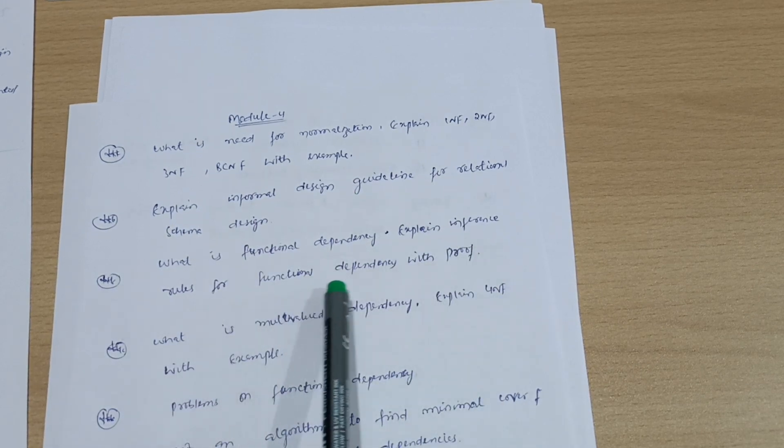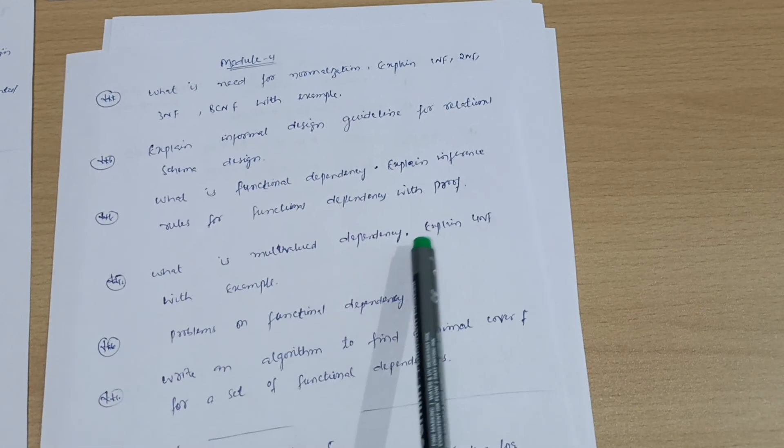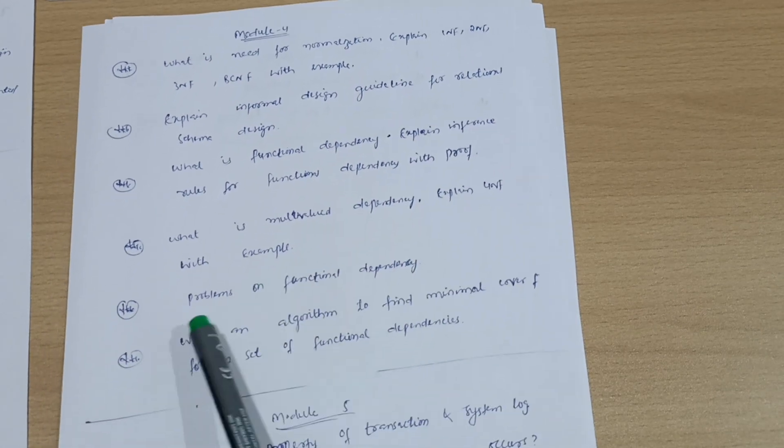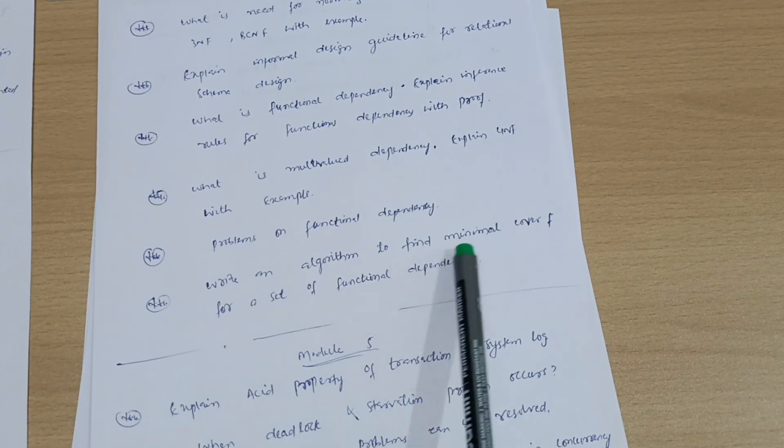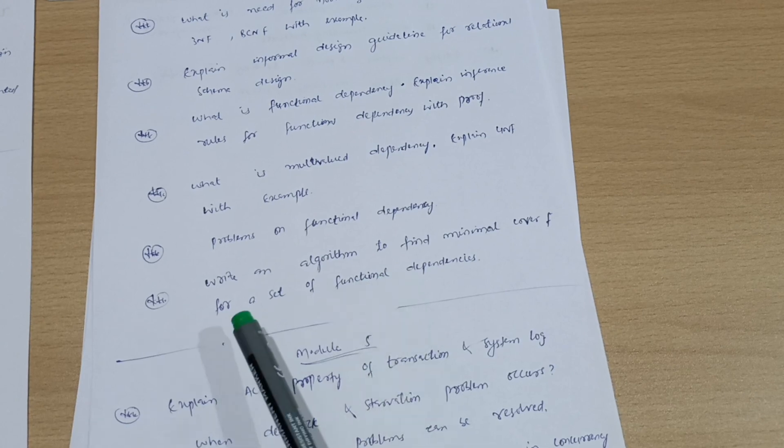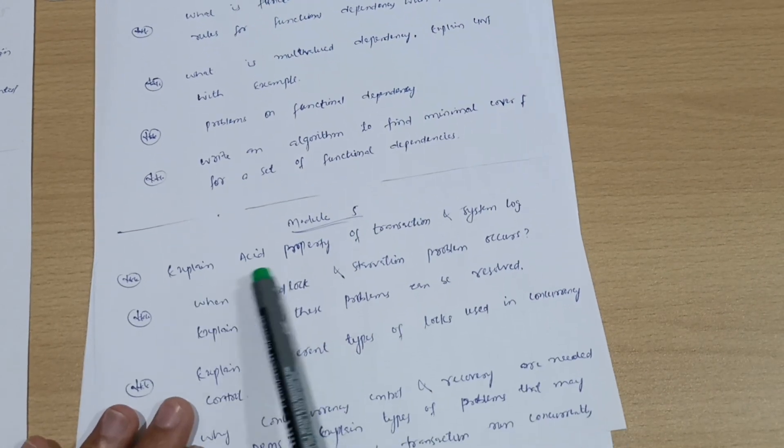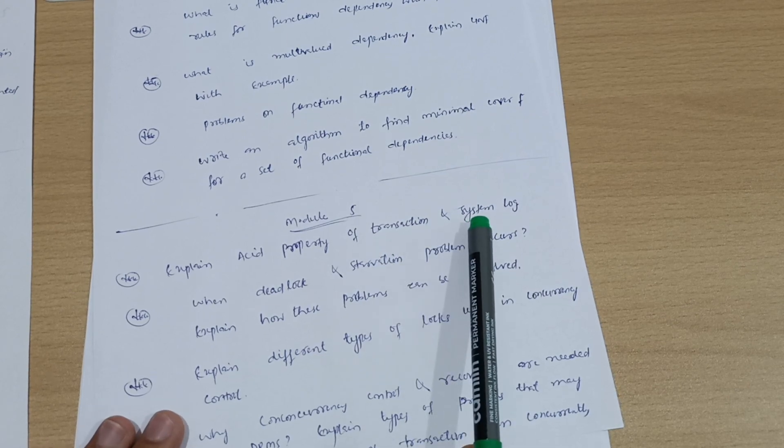Explain inference rules for functional dependencies with proof. What is multi-valued dependency? Explain 4NF with examples. Problems on functional dependencies. Write an algorithm to find minimum cover for a set of functional dependencies. This is all about Module 4.